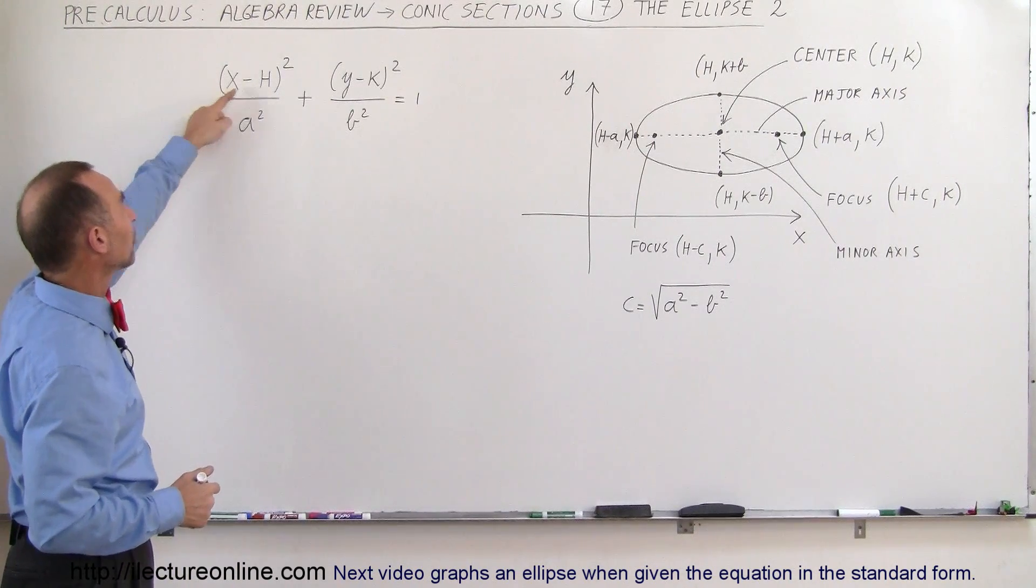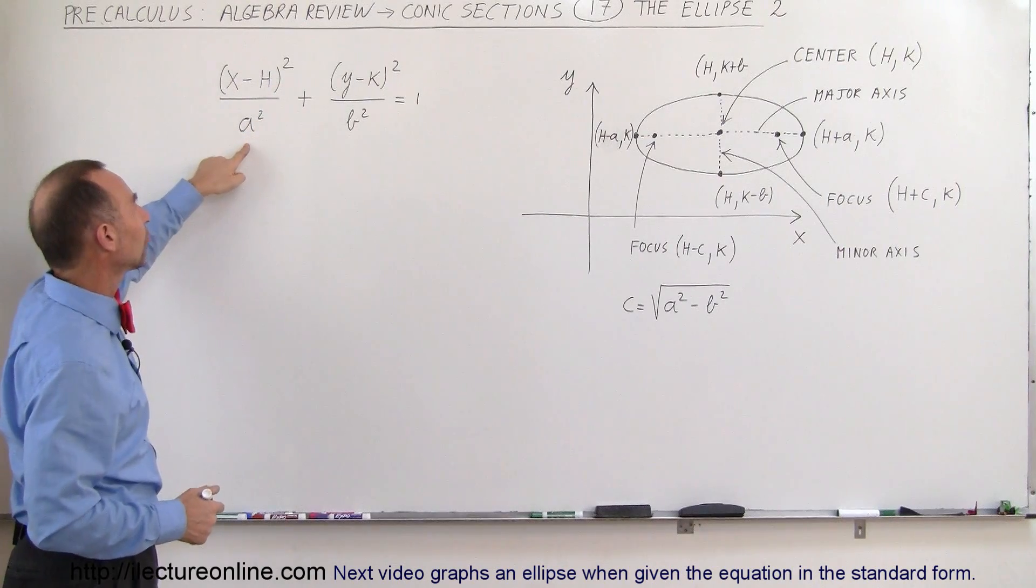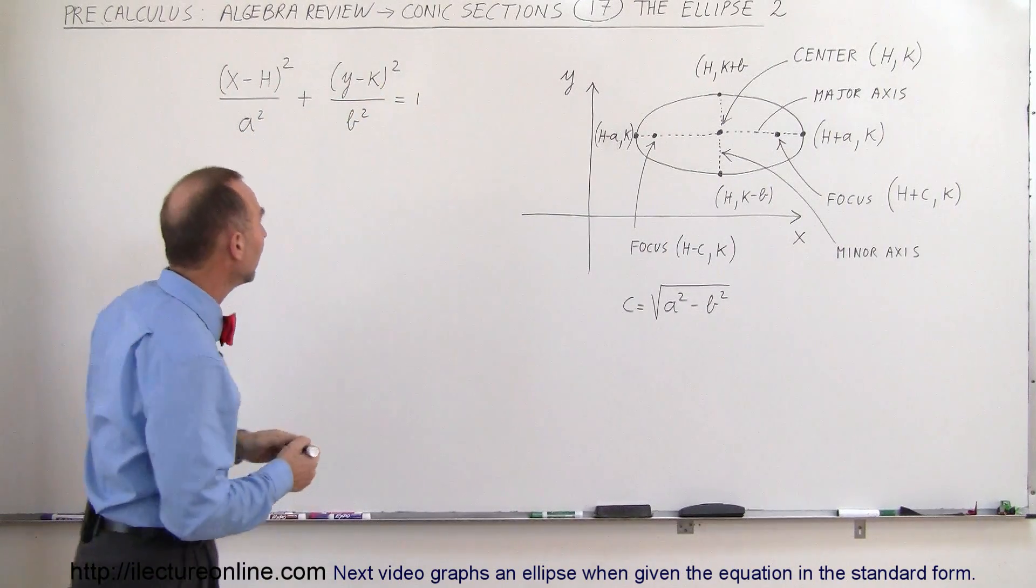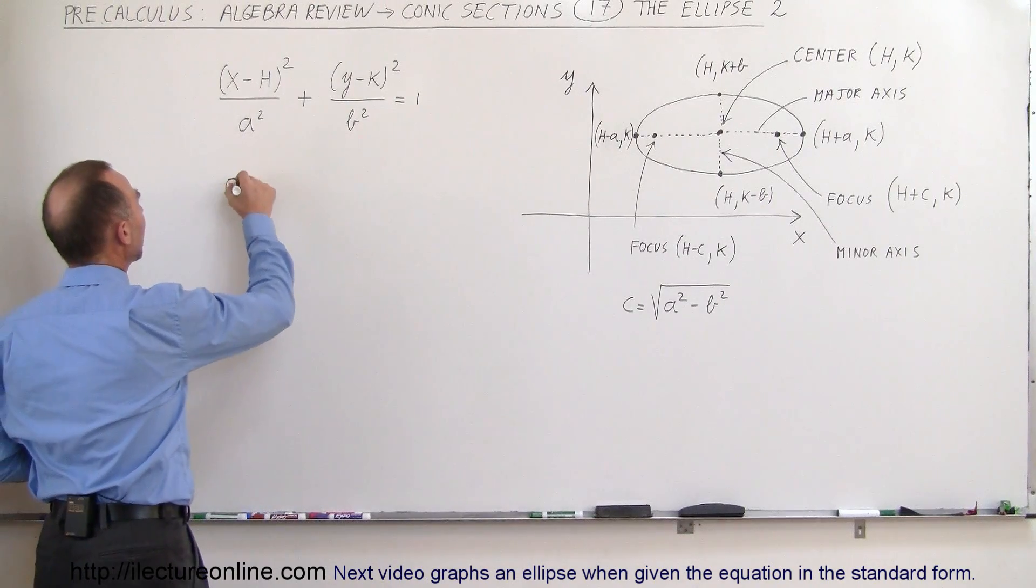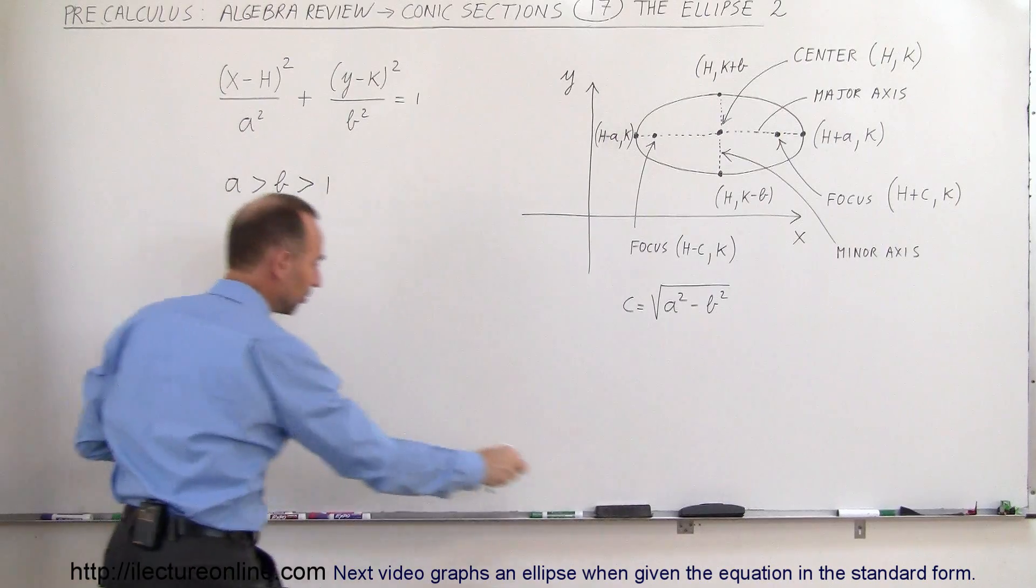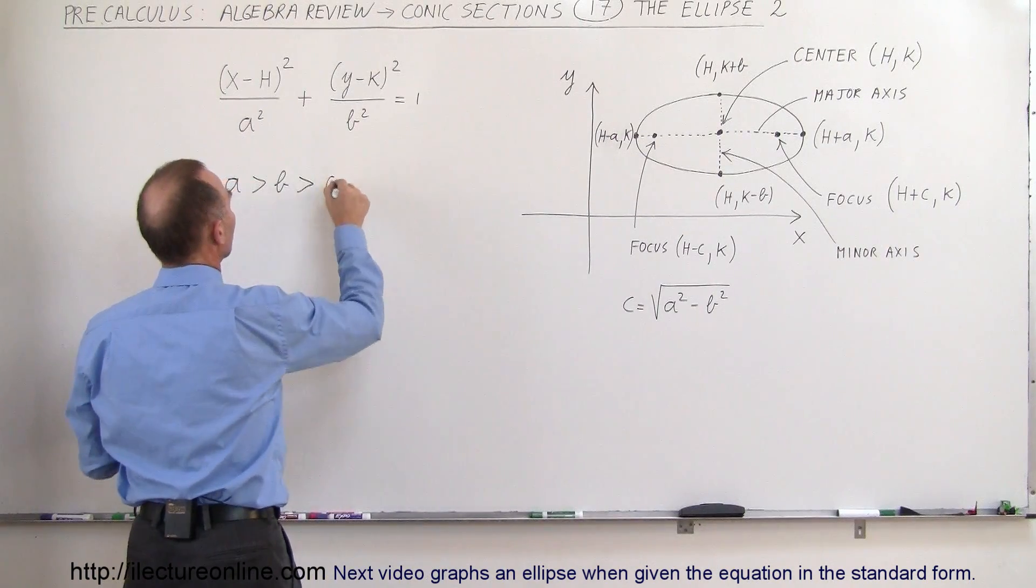The standard equation is (x-h)²/a² plus (y-k)²/b² equals 1. And the assumption is that a is greater than b is greater than 0.